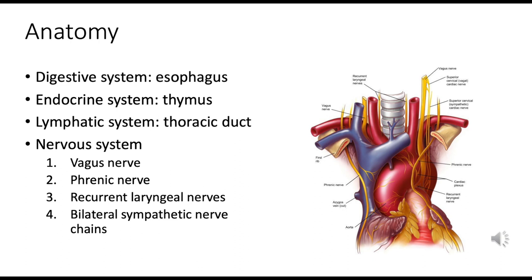The thoracic duct originates in the abdomen around the second lumbar vertebra, ascends through the diaphragm into the thoracic cavity, and typically drains into the venous system at the junction of the left subclavian and left internal jugular veins. Injury to the thoracic duct during surgery can lead to chylothorax, where lipid-rich lymph accumulates in the pleural space, identifiable by milky-looking fluid on a chest drain.